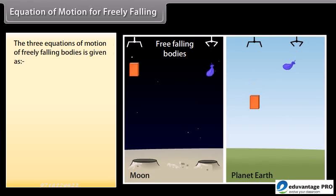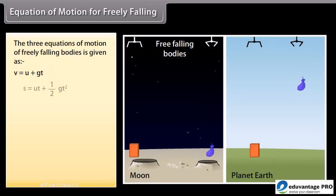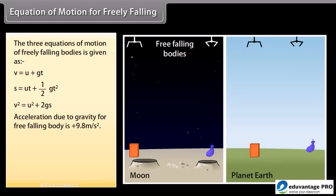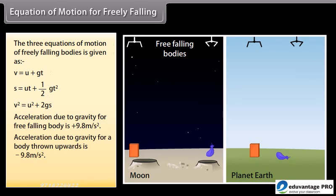Equations of Motion for Freely Falling Bodies: The three equations of motion are: v = u + gt; s = ut + ½gt²; v² = u² + 2gs. The acceleration due to gravity for a freely falling body is +9.8 m/s², and for a body thrown upwards it is −9.8 m/s². The weight of an object on the Moon is one-sixth of its weight on Earth.